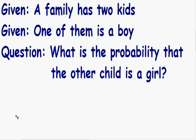Welcome to another one of my brain teasers. In this video, we have a family that has two kids — that is given to us. And we know for a fact that one of them is a boy — that is also given to us. The question of this brain teaser is: what is the probability that the other child is a girl?